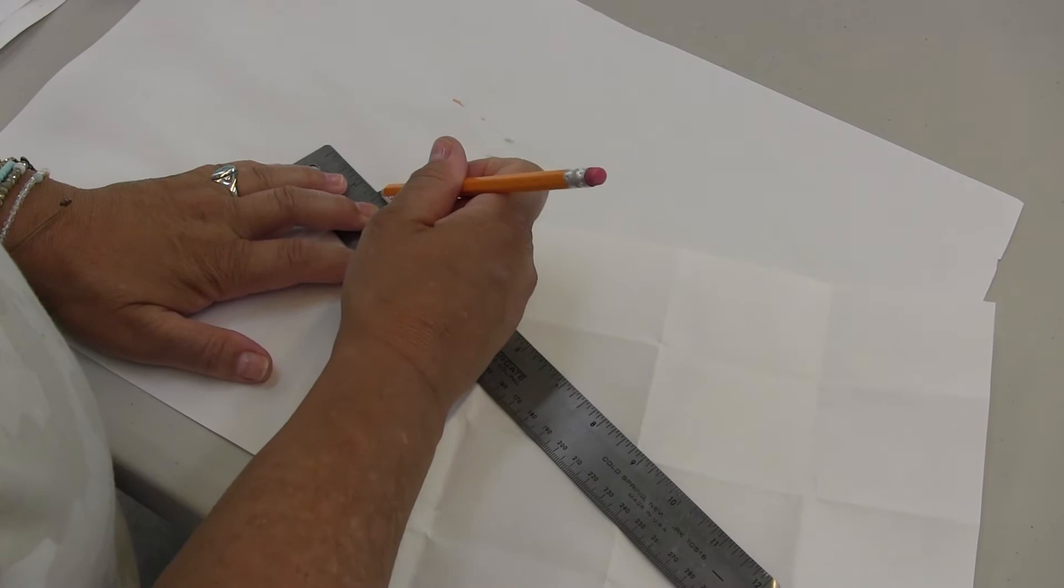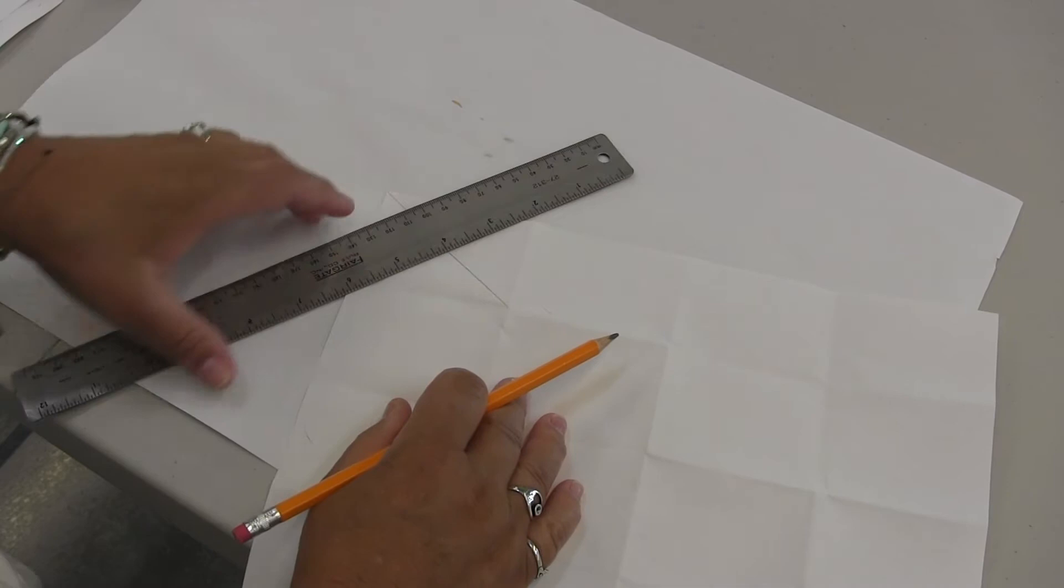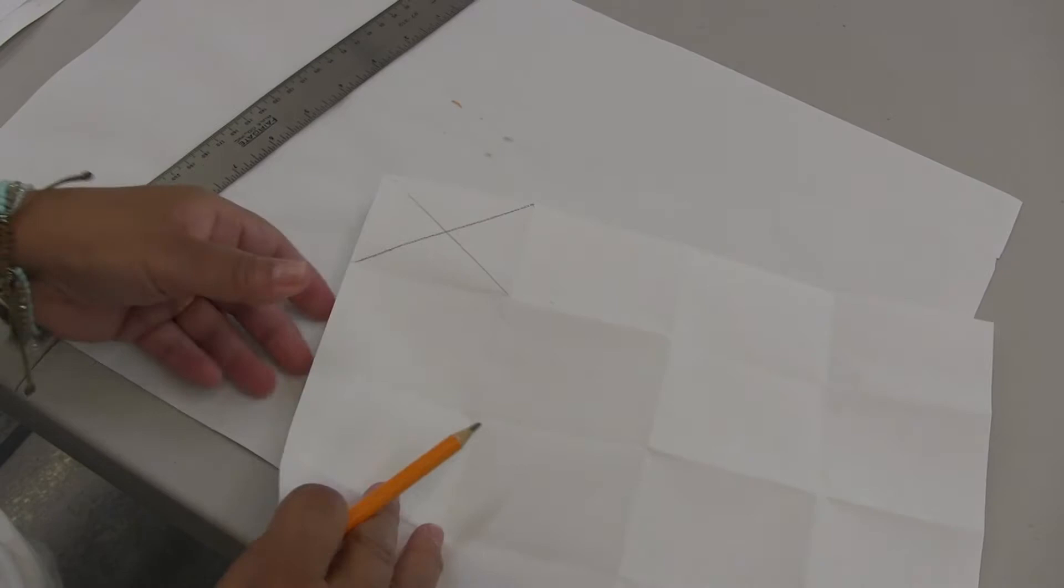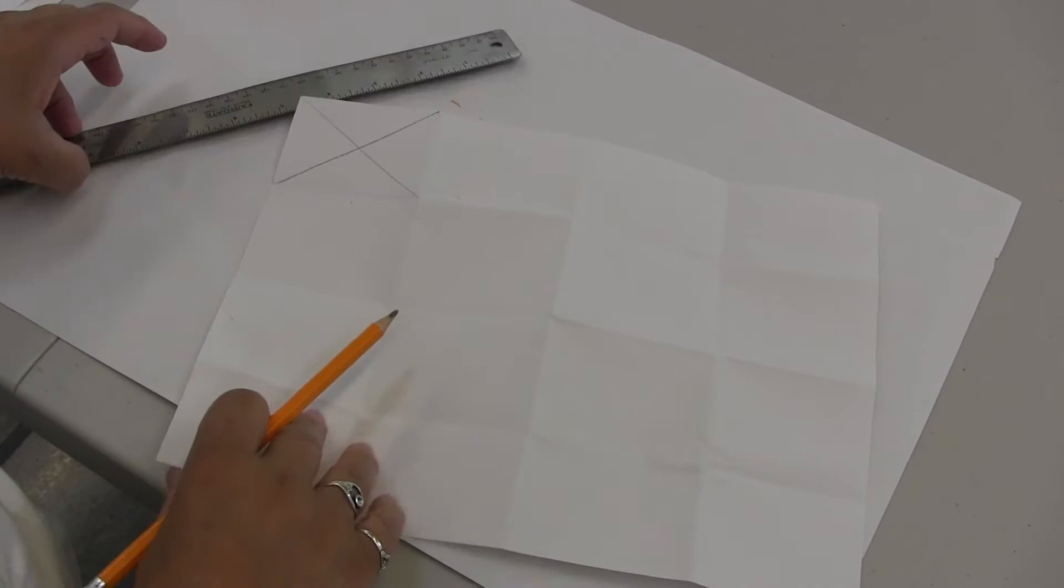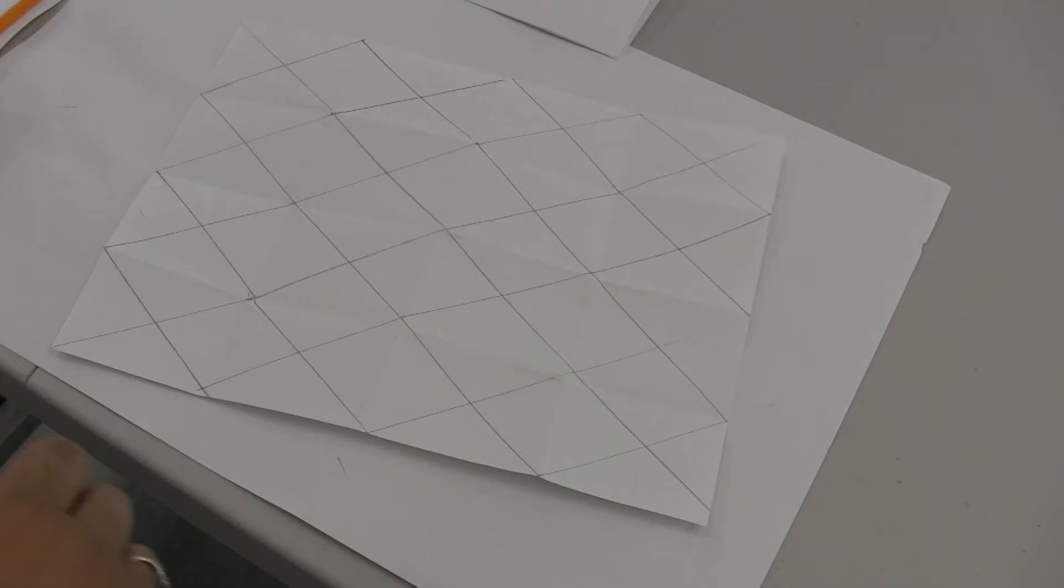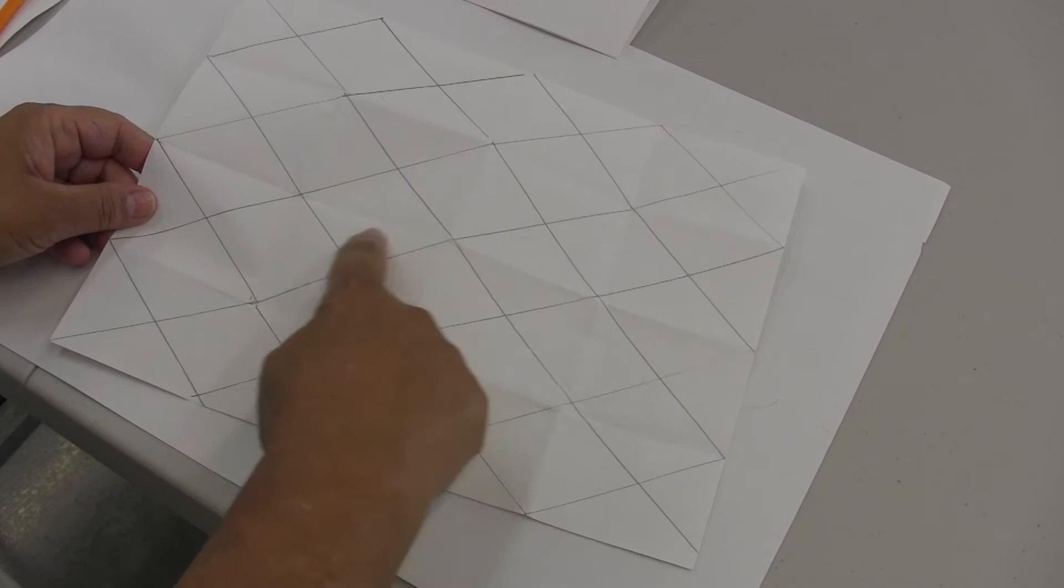An X goes that way from corner to corner. I'm going to put X's in all my boxes and you're going to do the same thing. You see how all my boxes have X's in the middle. Now we've created little triangles, right?